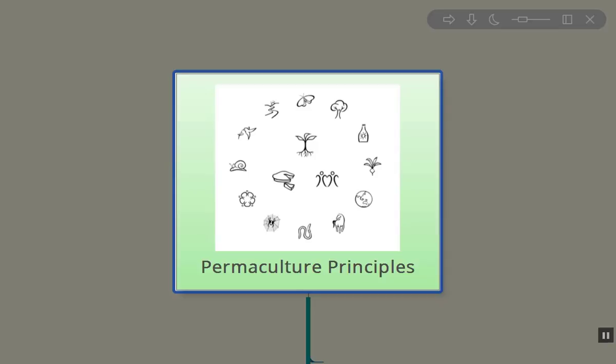The permaculture principles were introduced, I believe, in 1978 in Permaculture 1 by Bill Molson and David Holmgren, and David Holmgren consolidated the permaculture principles down to 12. Other people have done other work. I know Toby Hemingway has contributed a lot by recategorizing or representing the permaculture principles. I really like the way that David Holmgren put these together.